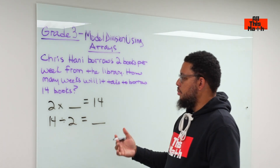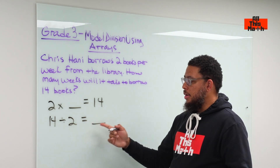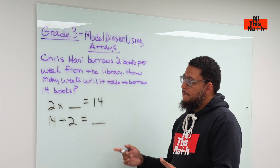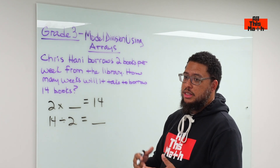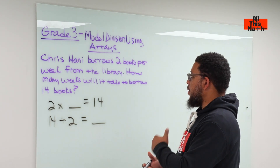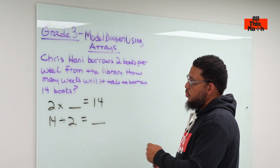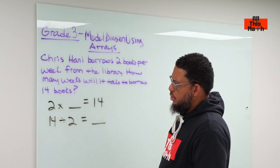So two times blank equals 14 can also be represented as 14 divided by two equals our quotient. Some young people know that 14 divided by two is seven, so they would know it would take seven weeks to borrow a total of 14 books. But let's also create an array.